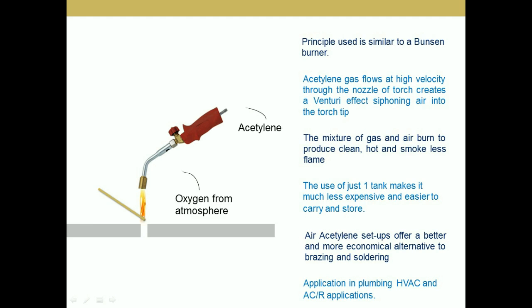The air acetylene welding process uses a torch which is connected to acetylene gas. The principle on which this welding process works is based on the Bunsen burner, where acetylene gas flows at high velocity through the nozzle of the torch, creating a venturi effect that siphons air into the torch from the atmosphere. The mixture of gas and air burns to produce a clean, hot, and smokeless flame.